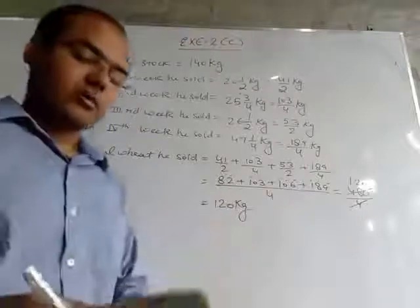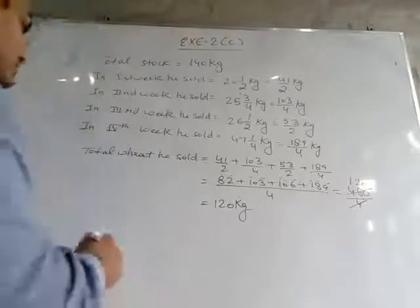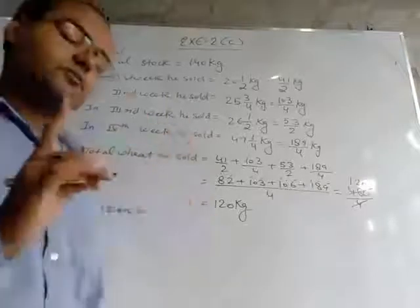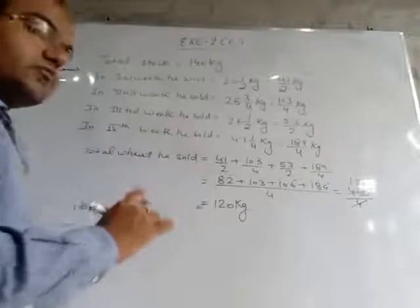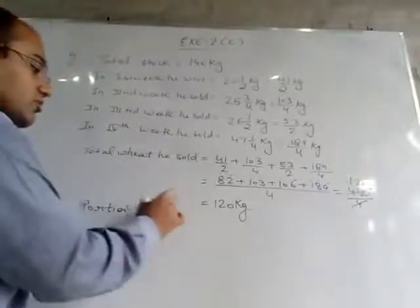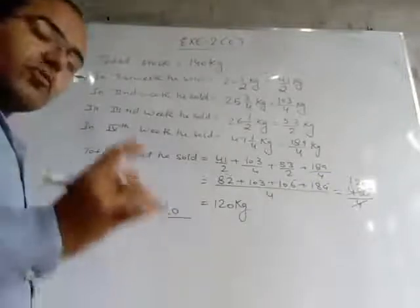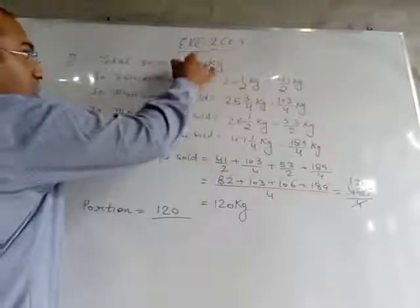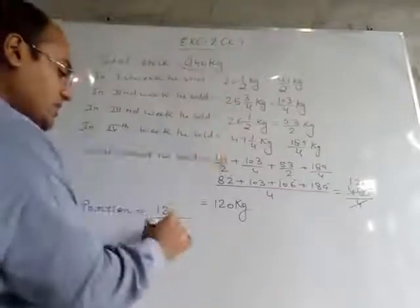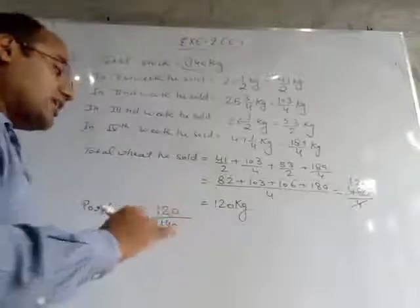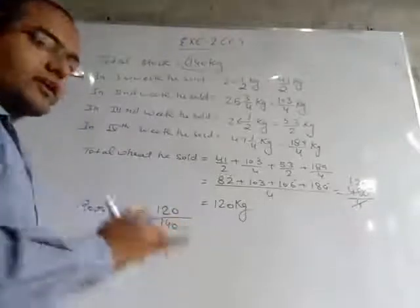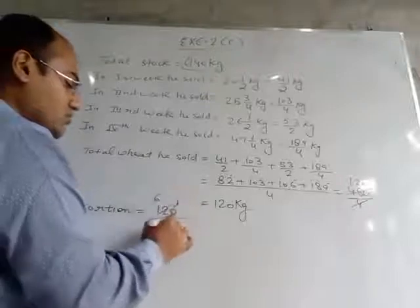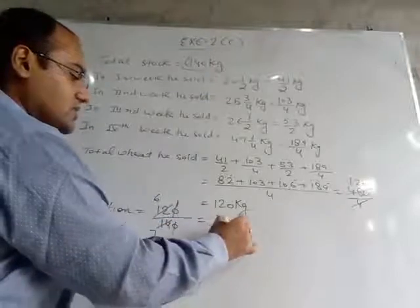He sold 120 kg of wheat. Now what portion of the stock did he sell? To find the portion, write wheat sold (120) in the numerator and total stock (140) in the denominator: 120/140. Cancelling zeros and simplifying — dividing by 2 gives 6/7. So the final answer is 6/7.